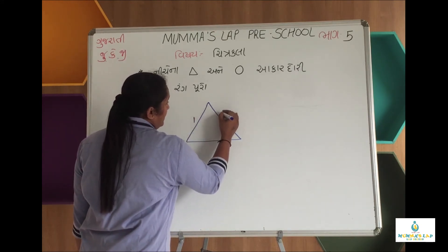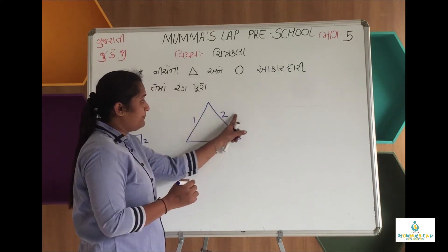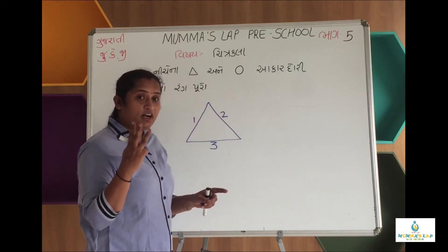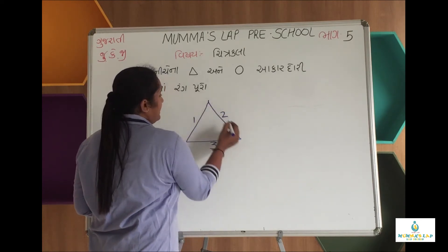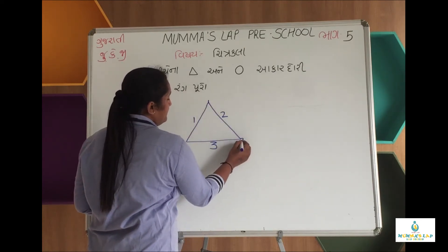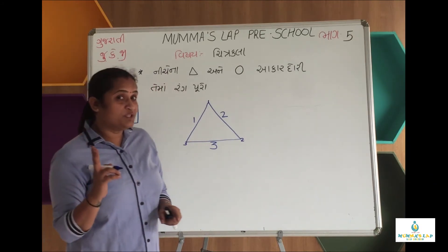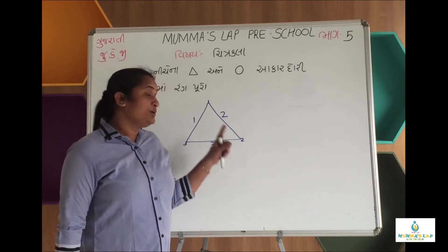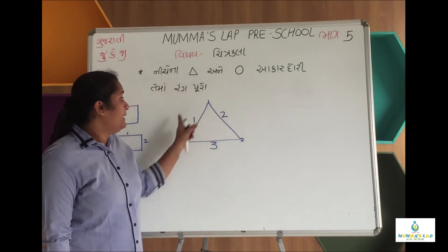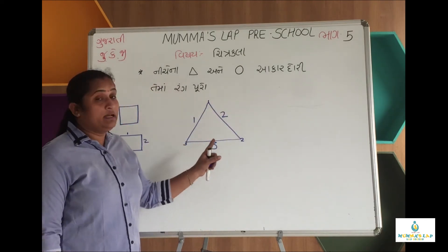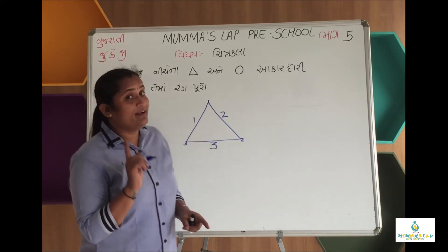1, 2, 3. ત્રણ બાજુઓ છે. ખૂણા કેટલા છે? 1, 2, 3. ત્રણ બાજુઓ, ત્રણ ખૂણા. (1, 2, 3 — there are three sides. How many corners? 1, 2, 3 — three sides, three corners.)